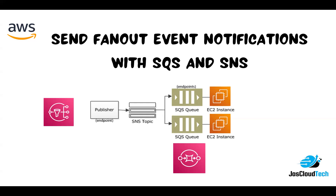Welcome to my channel. In today's video I'll be discussing how we can send fanout event notifications using SQS and SNS — that is the queuing service and the notification service. Basically, whenever a message is published to an SNS topic, we will be using multiple endpoints to which the message will be delivered — we can use Firehose delivery streams, Amazon SQS queues, HTTPS endpoints, or Lambda functions — to parallelly process these messages.